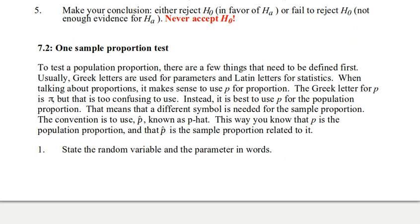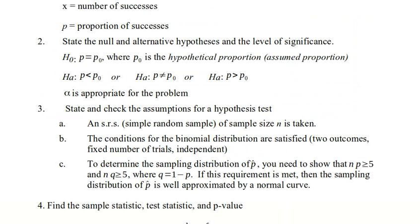I'm going to skip straight to the requirements for a one sample proportion test. The first thing is to state the random variable and parameter in words. So x is the number of successes. Remember that success doesn't necessarily mean a good thing. Successes could be very bad things. It's what you are counting. And P is the proportion of successes.